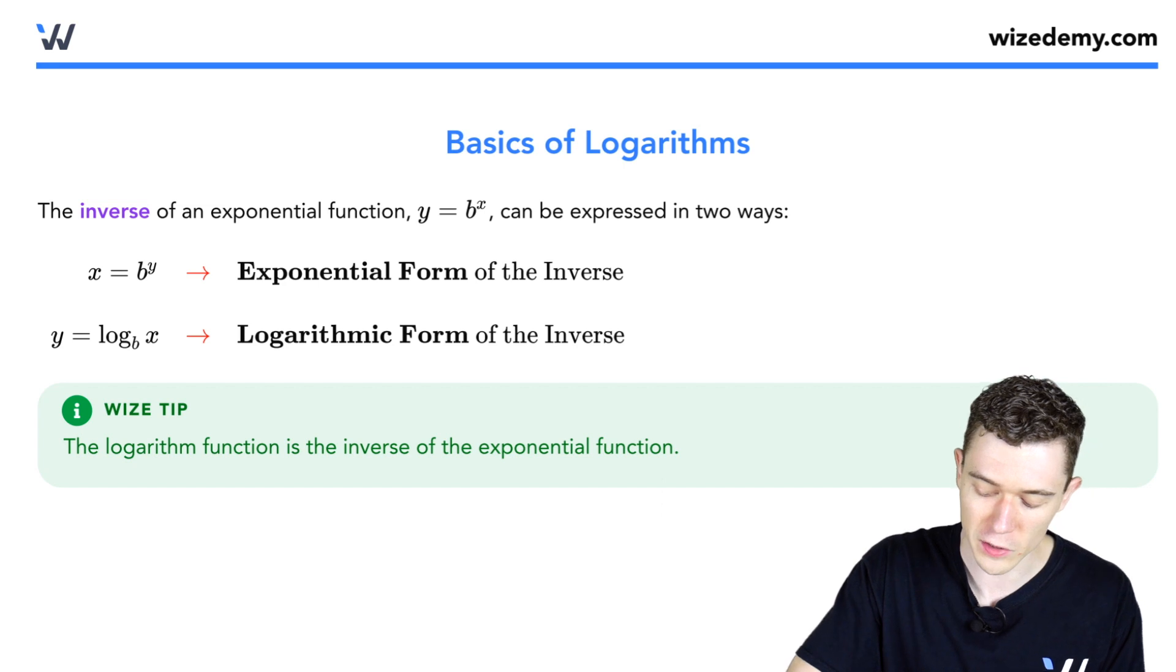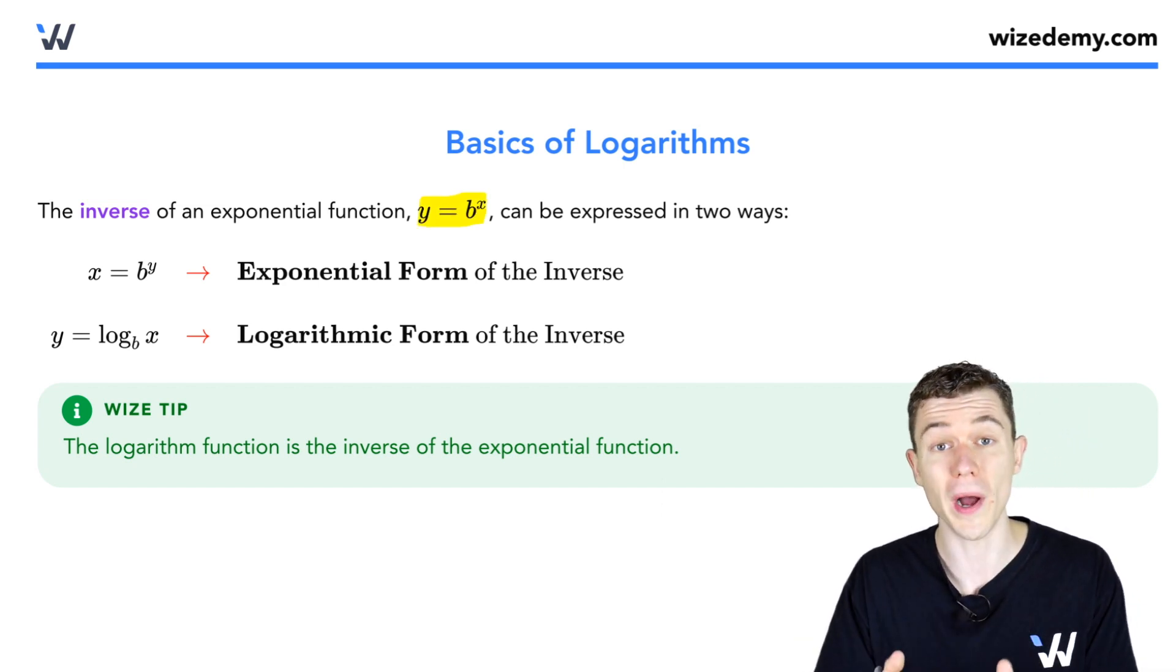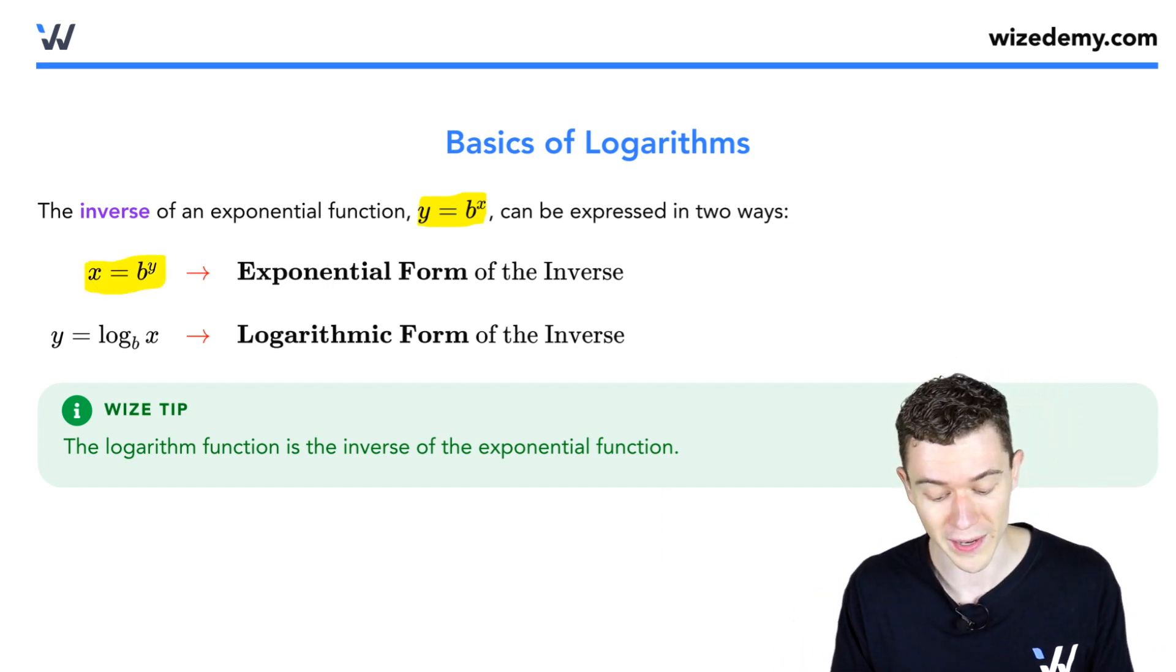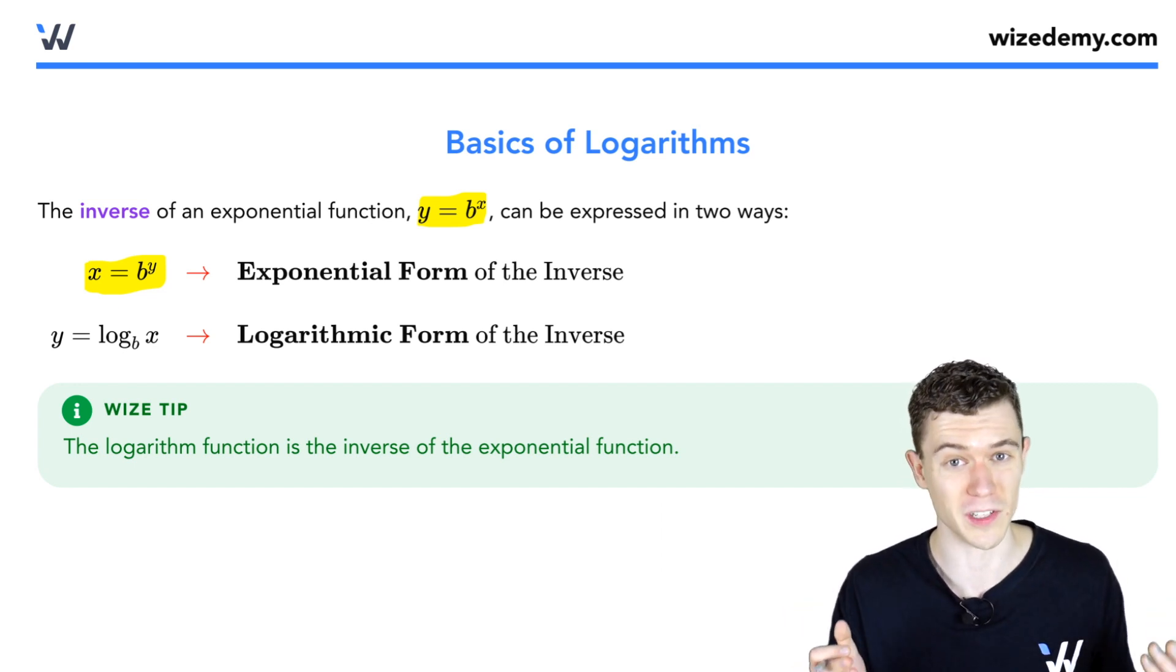Remember, inverse means switch x and y. So if we have the exponential function y equals b to the x, if we interchange x and y, that would say x equals b to the y. That's the exponential form of the inverse of that exponential function.